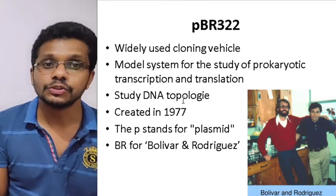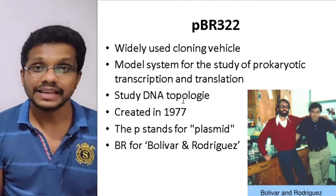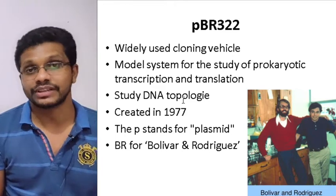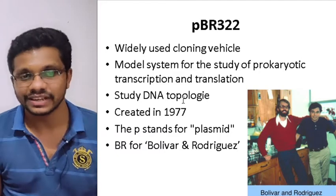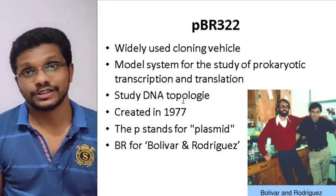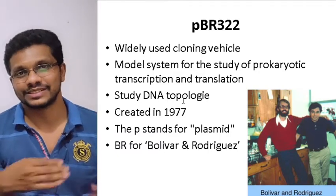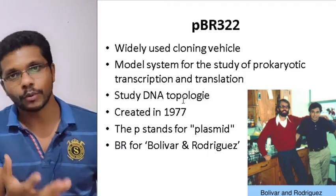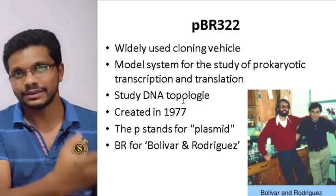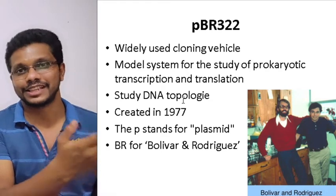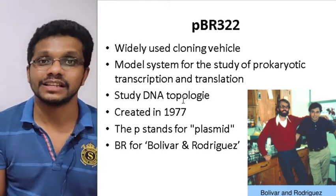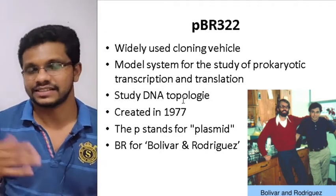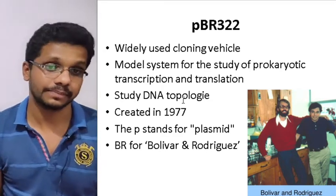The name PBR322: 'p' stands for plasmid because it is a plasmid. 'BR' is actually the names of the creators — Bolivar and Rodriguez — their initials were given. And '322' is actually the serial number. They have done so many experiments and so many combinations, and at last they got PBR322 — maybe their 322nd experiment produced this particular vector. That's why it's named PBR322; that's the serial number they assigned during their experiments.